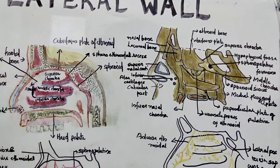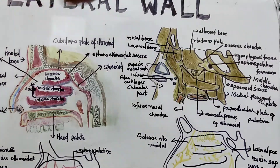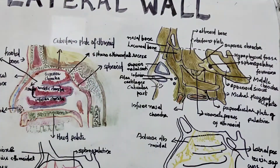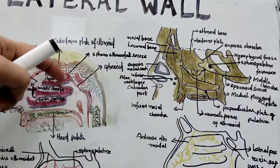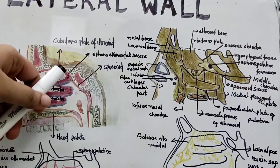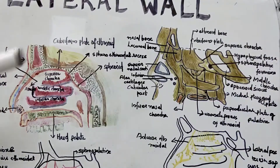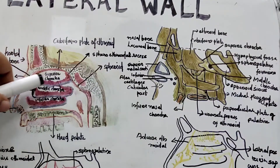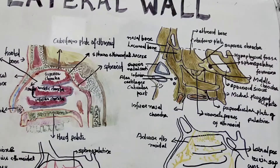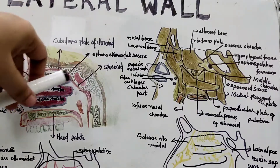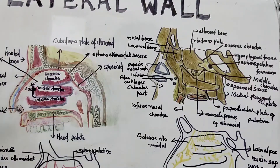In the previous class we discussed about the nasal septum. Today we will discuss about the lateral wall of the nose. This is the picture of the lateral wall, and it is characterized by bony projections called the conchae. They are shelf-like projections and they improve the quality of the air that is inhaled.